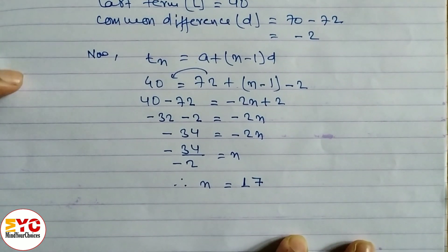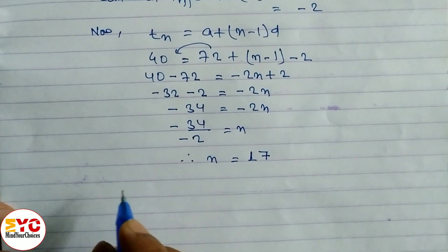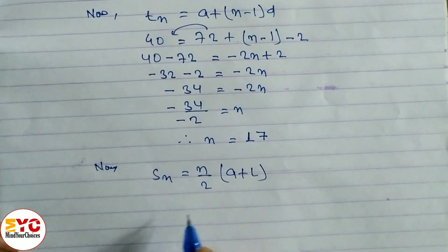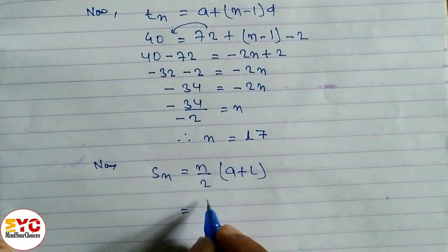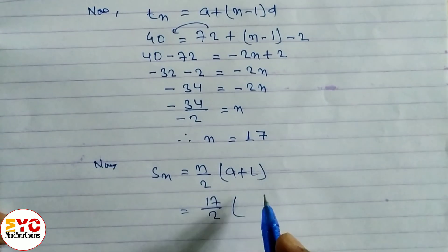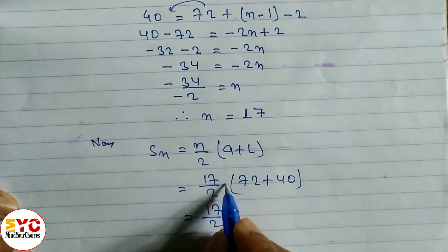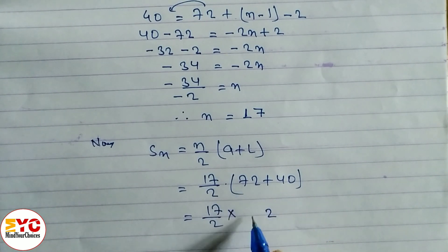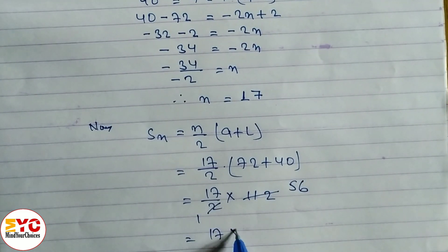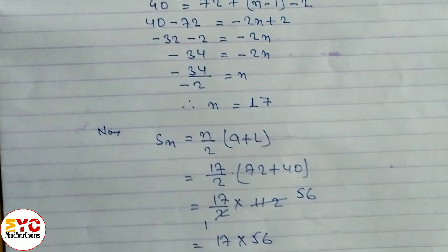Now we have n = 17, a = 72, l = 40, d = −2. We can use either sum formula. Using S_n = n/2 × (a + l): 17/2 × (72 + 40) = 17/2 × 112 = 17 × 56 = 952.